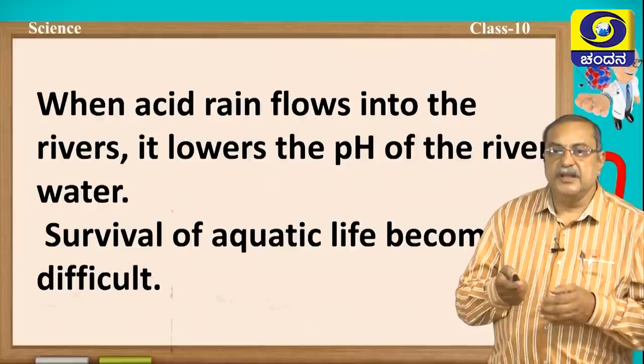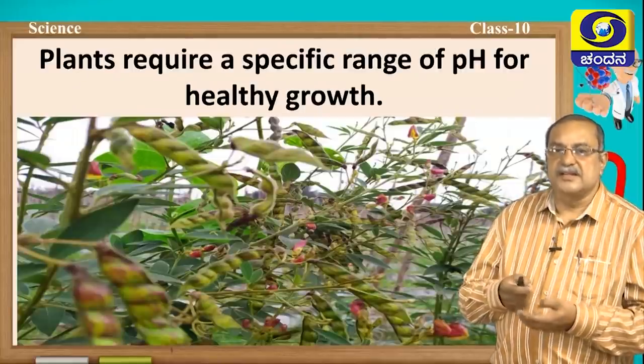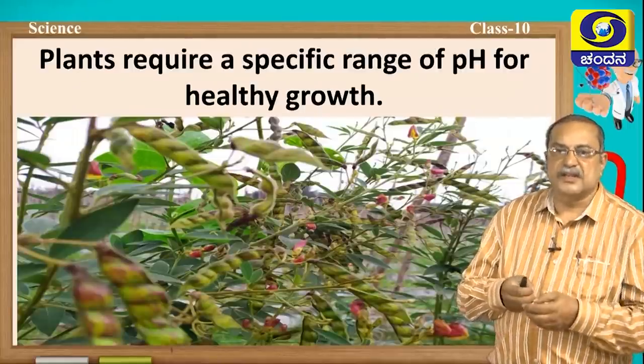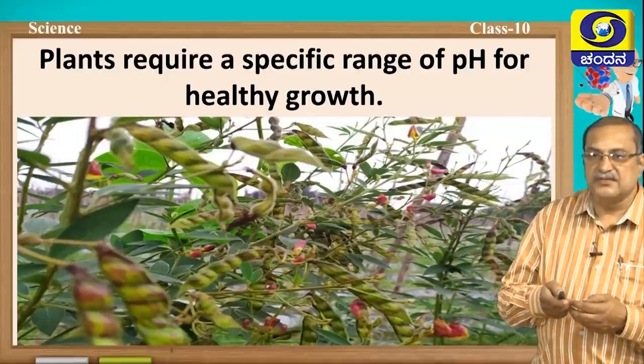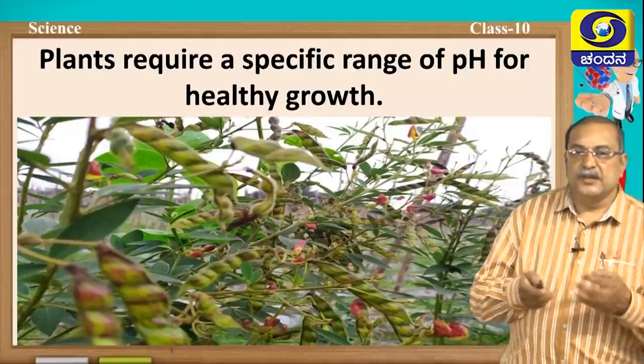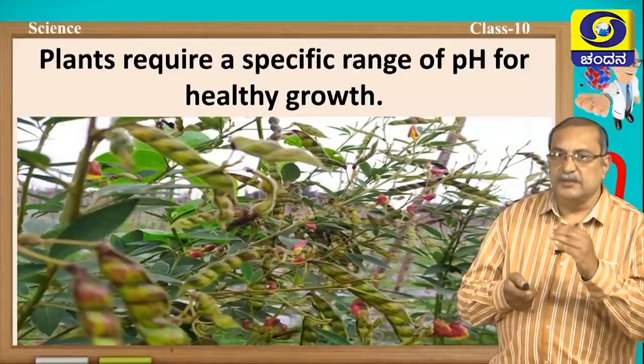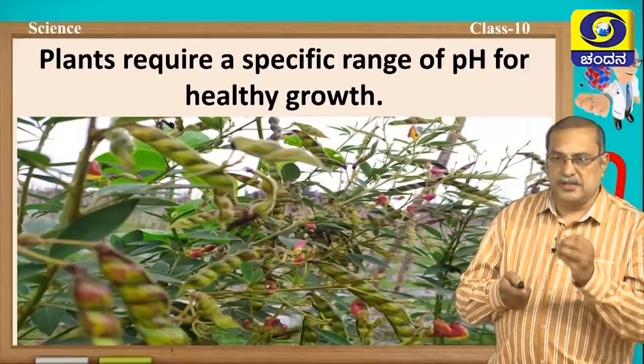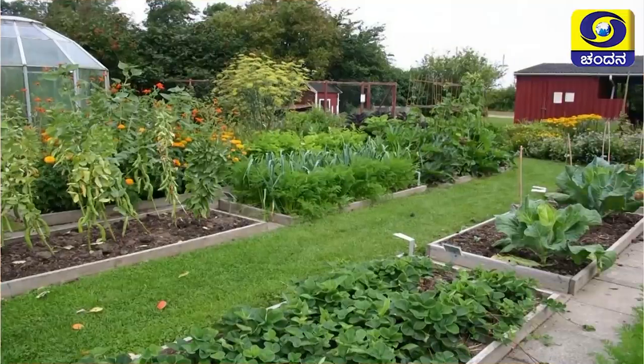Plants require a specific range of pH for healthy growth. Each and every plant requires one specific range of pH. Different plants require different pH values. That is why some chemical bases or acids are added to maintain the required pH value, so that the plants will grow luxuriously.